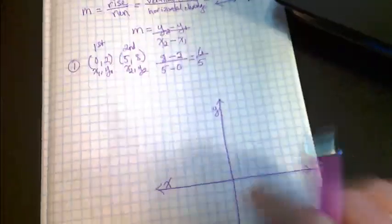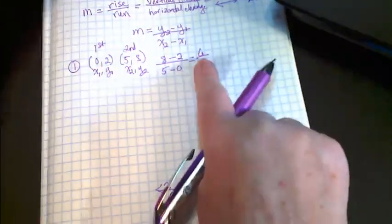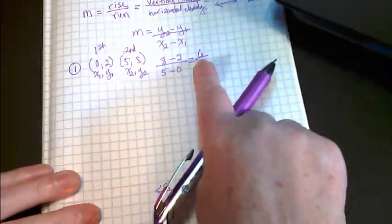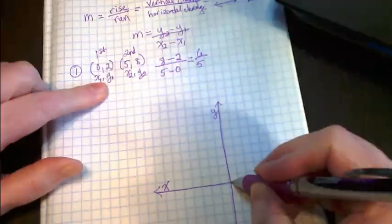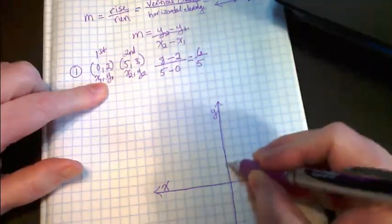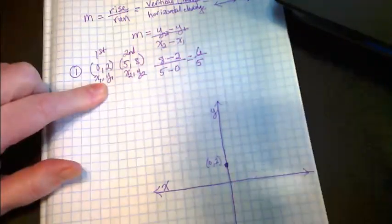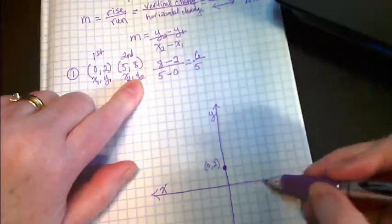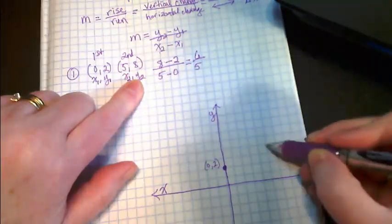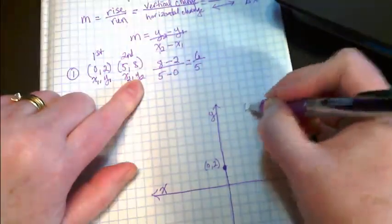What does that mean? It means that if I was going to graph these two pairs onto this graph and show the slope, it would be 6 rise and 5 run. So let's graph them. 0, 2 is going to be 0, 2. And let's label that. And 5, 8 would be 5, 8. And let's label that.